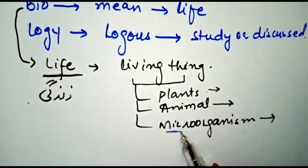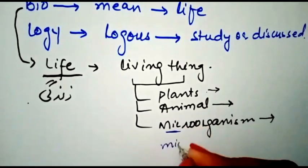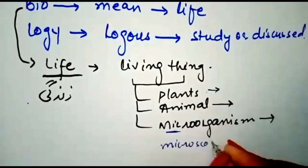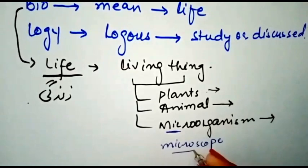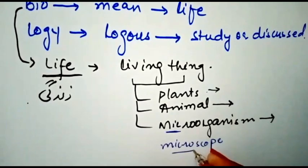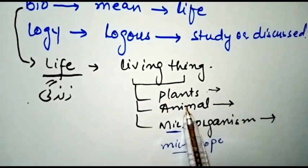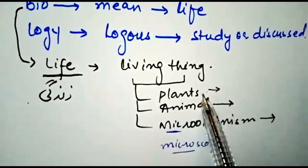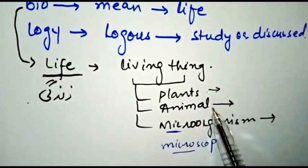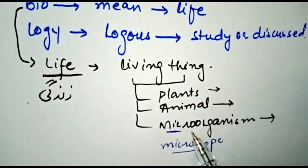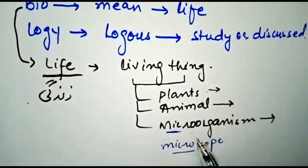That is why animals are called heterotrophs. The third category is microorganisms. These organisms cannot be seen with the naked eye and must always be viewed under a microscope. That is why they are called microorganisms. So life has three categories: plants, animals, and microorganisms.